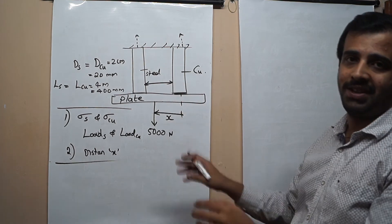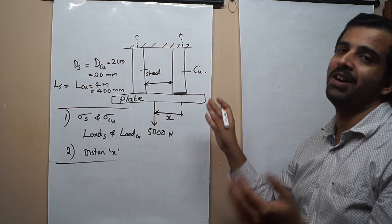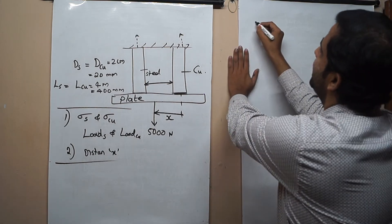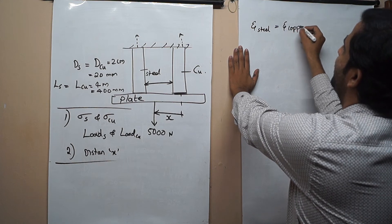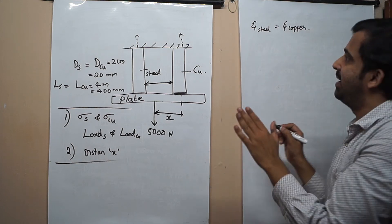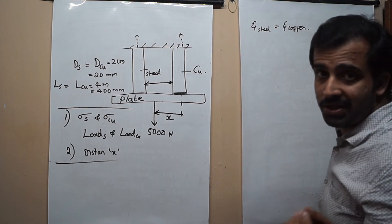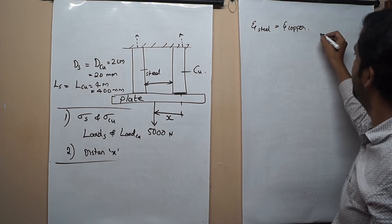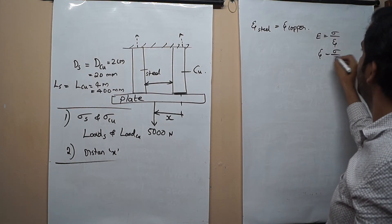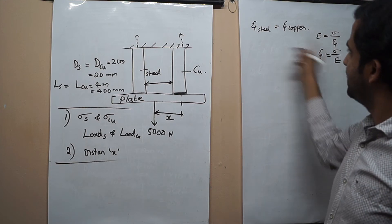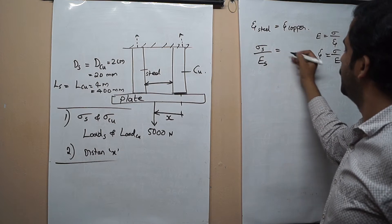For solving this, we know one thing from the principles we studied: if the length of the steel and copper bars are the same, we can say that the strain on the steel and the copper bar will be the same. So I'm writing: strain on steel equals strain on copper. From Hooke's law, elasticity equals stress divided by strain, or strain equals sigma divided by E. So I can write: sigma of steel divided by E of steel equals sigma of copper divided by E of copper.